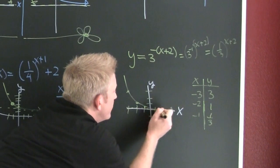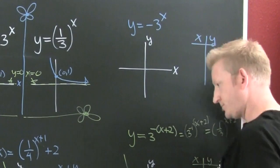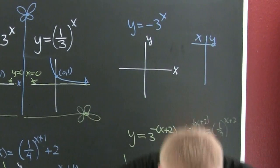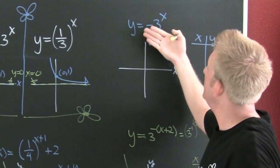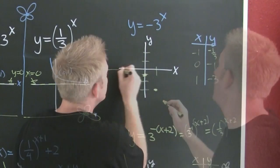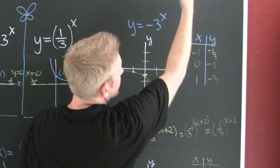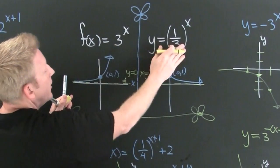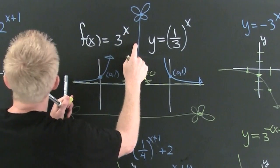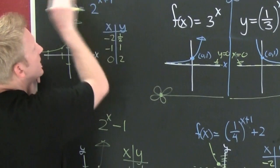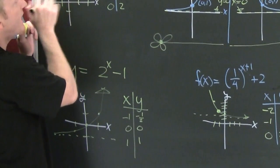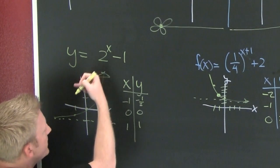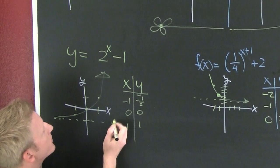Remember when graphing polynomials, a negative on the outside flipped everything over the axis. Here the exponential would normally be upward sloping, but the negative flips it to downward sloping. To summarize the shifting rules: something in the X group moves it left or right; something outside the X group moves it up or down. A shift left one means the special point moves left one; a shift down one drops the whole graph down one, including the asymptote.